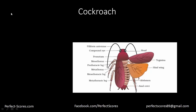Hello and welcome to another video of Biology by Perfect Scores. This is Prithinder Kaur. We've just done a video on the earthworm and this video is going to focus on the cockroach. Cockroaches are dark-colored animals present in the class Insecta of Phylum Arthropoda, though they can sometimes also be bright yellow, red, or even green in color.